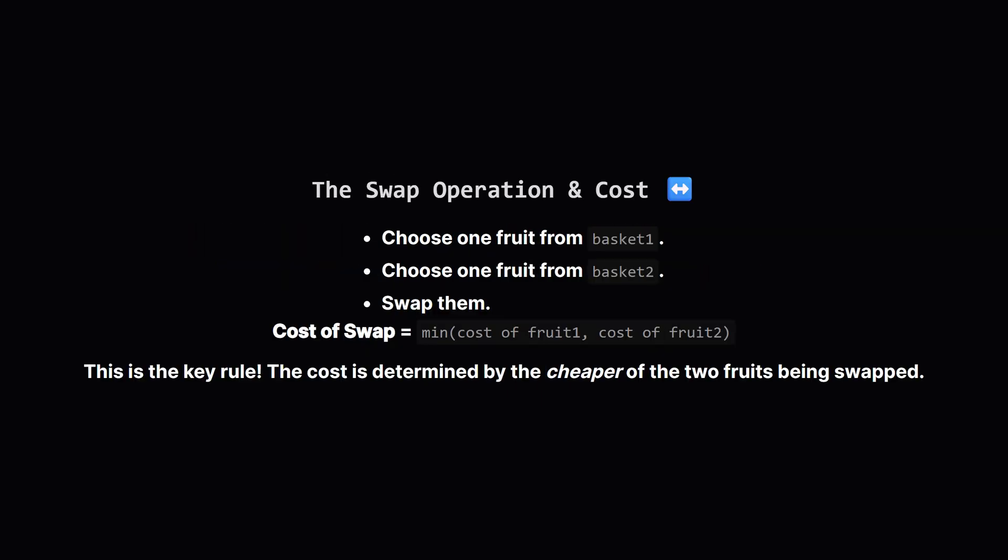Now, how do we fix the baskets? We can swap one fruit from the first basket with one fruit from the second. The interesting part is the cost. The cost of a single swap isn't fixed. It's the cost of the cheaper fruit involved in that specific swap. This is a huge clue that we should probably try to involve cheap fruits in our swaps whenever we can.